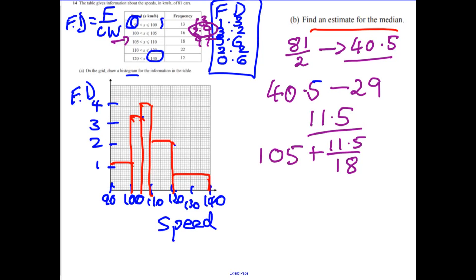Now we're going to add the fraction that we're into the group. So we are 11.5 the way into the group, and there are 18 in the group all together, and the width for the group is 5, just there. And if we work that out, that gives us 108.2. So I think it's probably fair to say about 108 kilometres per hour.